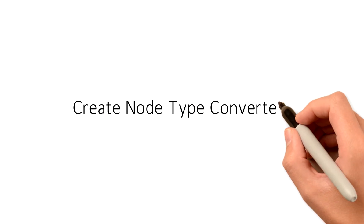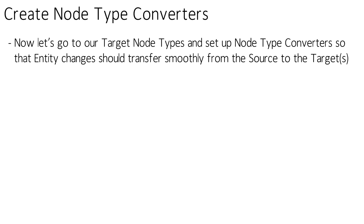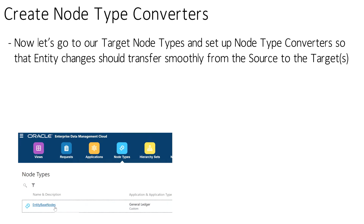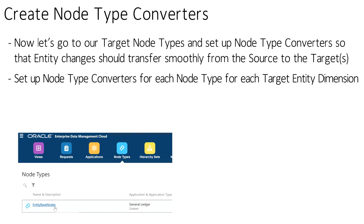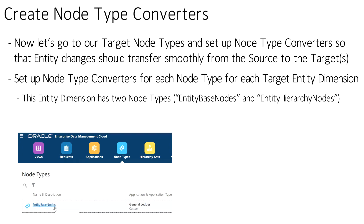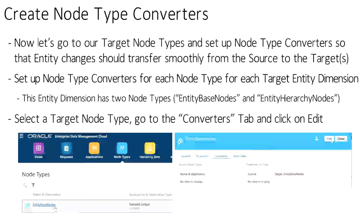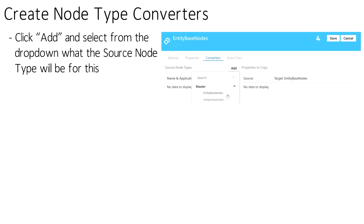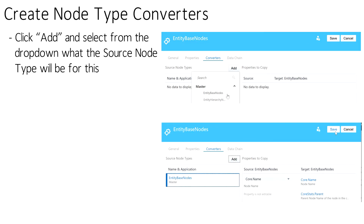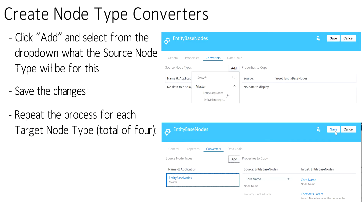Node type converters are easy to set up. Go to the node types menu and go to the Converters tab. The entity dimension has two node types: one for base nodes and one for the upper level hierarchy nodes. This setup accommodates different properties for the base and hierarchy nodes. We will want to set up a node type converter for each node type for each target dimension, so a total of four for this application. Click on Add, then select the source from the drop-down of available node types. Save the changes and repeat the process for all four.